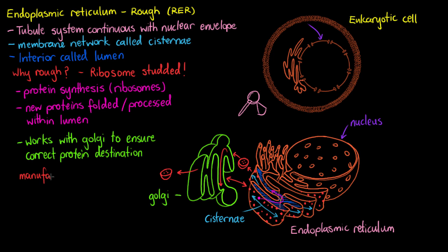And that leads us to a huge point that we need to remember. The rough endoplasmic reticulum — or the ribosomes of the rough endoplasmic reticulum — are going to be responsible for manufacturing all secretory proteins. So all proteins that are destined to leave the cell are going to be manufactured, folded, and processed here at the rough endoplasmic reticulum.